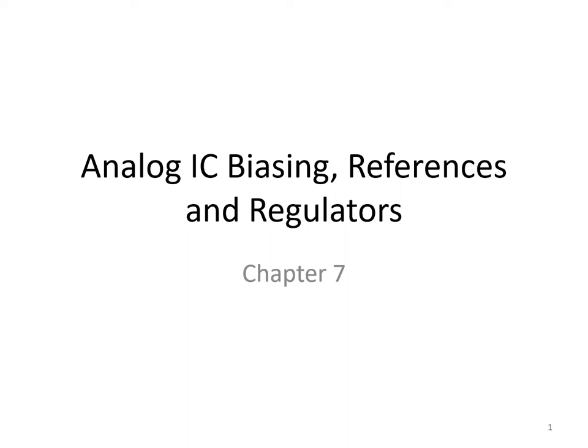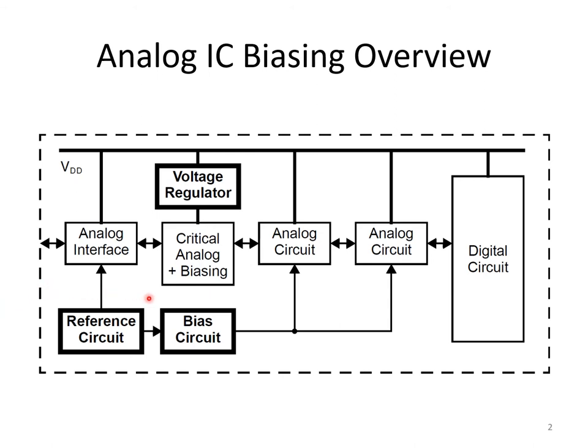In this video, we complete our discussion of analog IC biasing references and regulators by focusing on the design of voltage regulators. Whereas reference and bias circuits generally produce voltages from which very little or no current is drawn, voltage regulators are intended primarily to produce voltages from which some significant current is drawn—for example, the supply voltage of a critical analog circuit, and sometimes the supply voltage of a biasing circuit where low noise performance is critical.